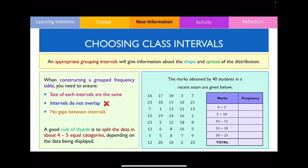Another common mistake is overlapping intervals. Notice how in this example the first class interval goes from 0 to 5, and the second also goes from 5 to 10. Because 5 appears in both class intervals, there is an overlap. Similarly, 10 overlaps between the second and third class interval, and so forth. Please do not make this mistake when creating your grouped frequency table.